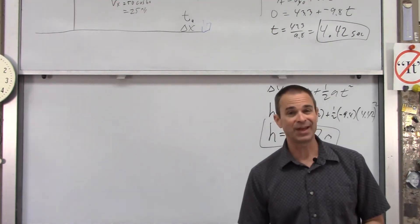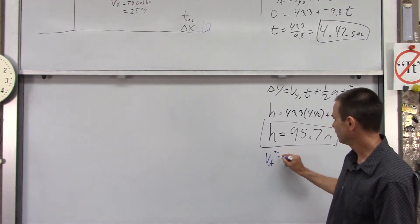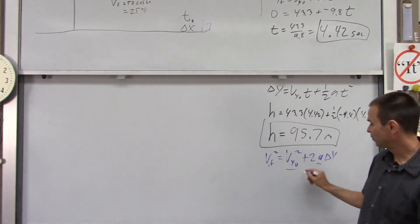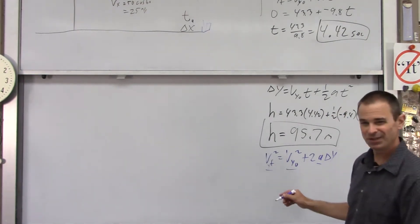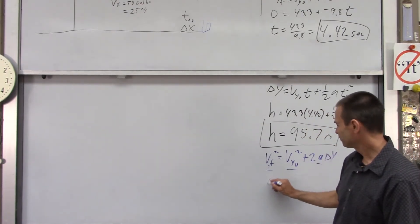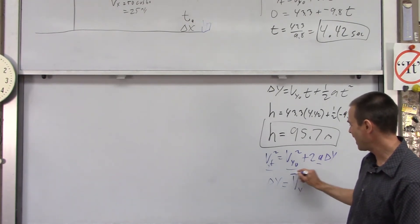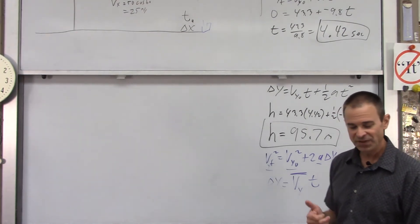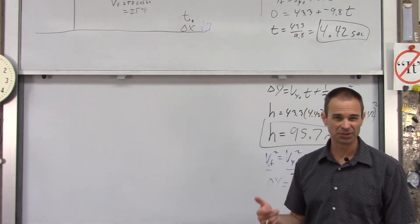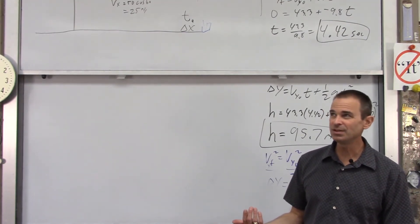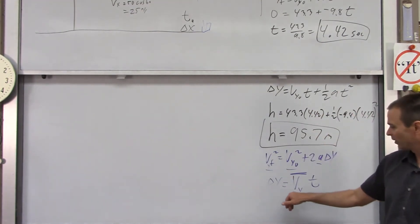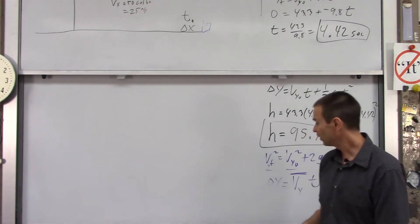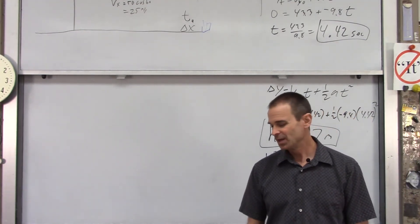Now, there are other ways you could have found that. You could have used VY final squared equals VY naught squared plus 2A delta Y. You know A is negative 9.8. You know this is 44.3. You know that's zero. So you could have found that too. You could have even, if you're really careful, you could have used delta Y equals VY average times time. Now you've got to be careful. What's VY average? Well, I know VY naught is 43.3. I know VY final is zero. What's the average of 43.3 and zero? That would be 21.65. So you would plug in a 21.65 there. You know your time is your 4.42 seconds. And if you multiply those out, you're going to get your 95.7 that way too. So there's three ways to do it. Just be careful with your signs.